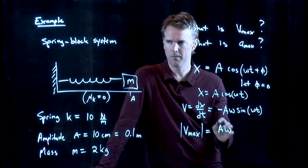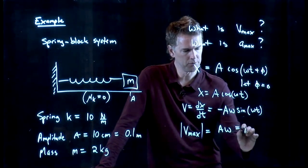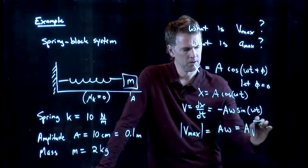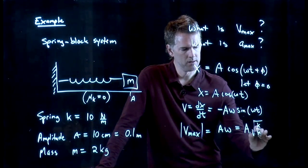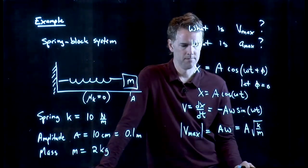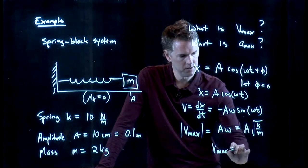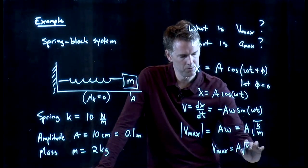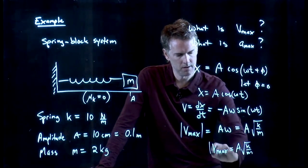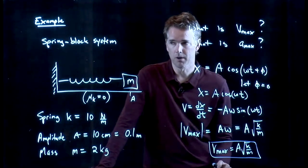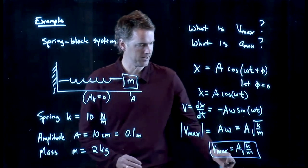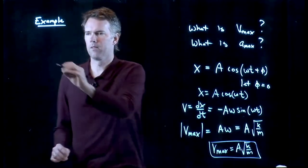But we know what omega is. Omega is the square root of k over m. And so we, in fact, have v max. It's A square root of k over m. And now we can plug in some numbers and figure out exactly what that is.